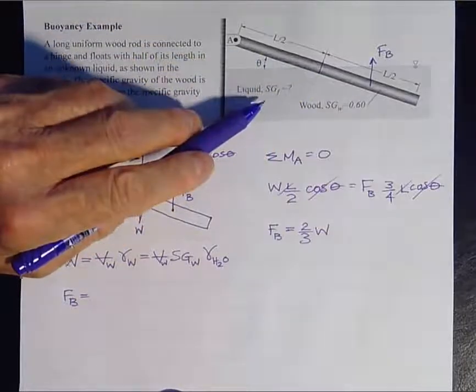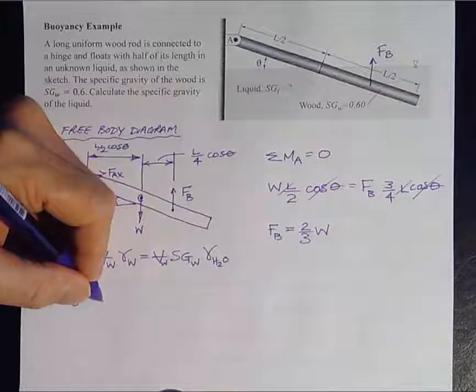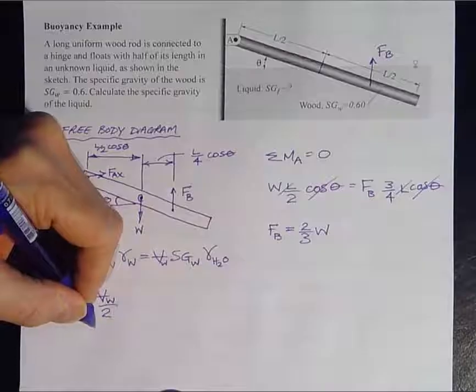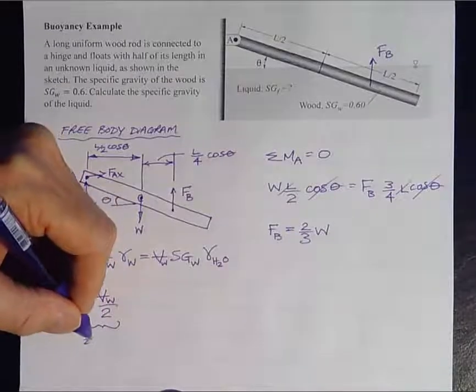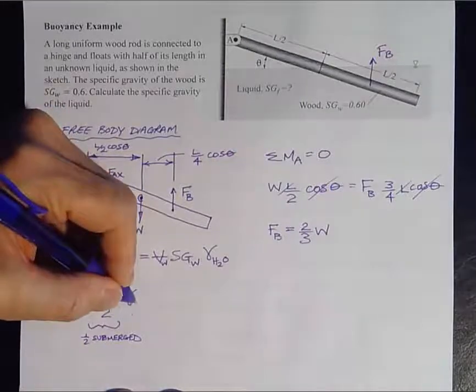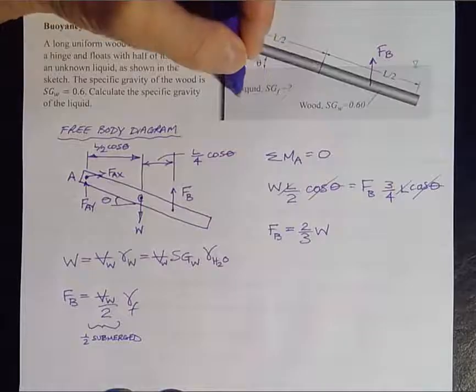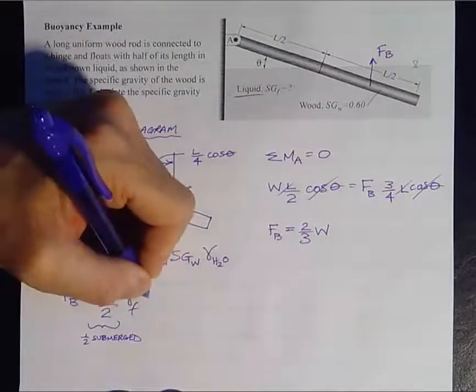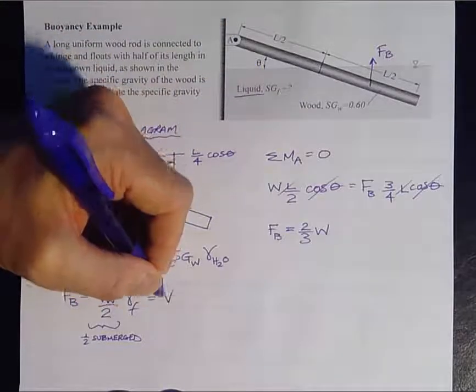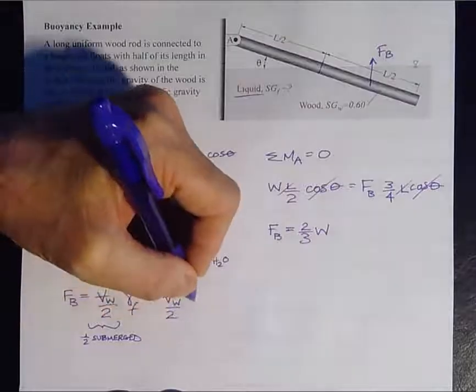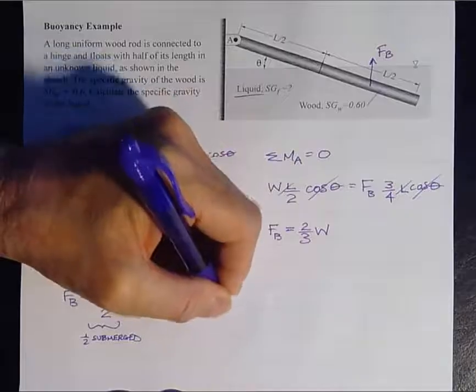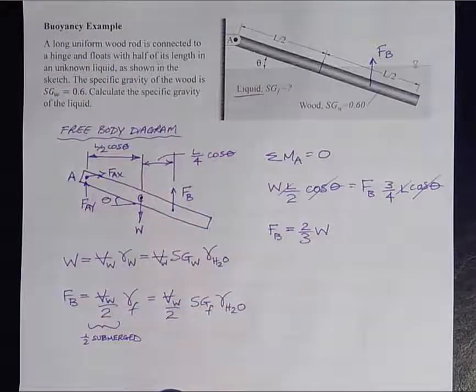And it's equal to the weight of the displaced fluid, of the unknown displaced fluid. So it's going to be half of the volume of the wood. I'll make a little note here. This is because we're one half submerged, times the gamma, the specific weight of the unknown liquid here. So we can put that now in terms of the specific gravity of the unknown liquid. So that'll be volume of the wood, divided by 2, specific gravity of the fluid, which is what we're after, times the gamma of water at 4 degrees C.